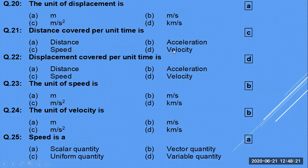The unit of speed is meter per second. It could also be km/h, but the SI unit is m/s. The unit of velocity is also meter per second. The formula of velocity is rate of change of displacement: displacement in meters divided by time in seconds gives m/s.